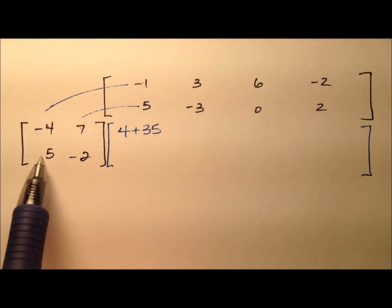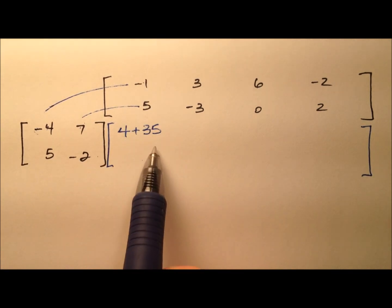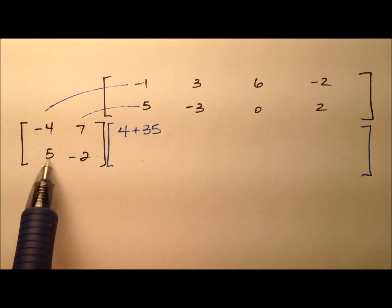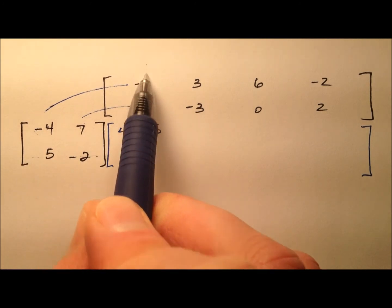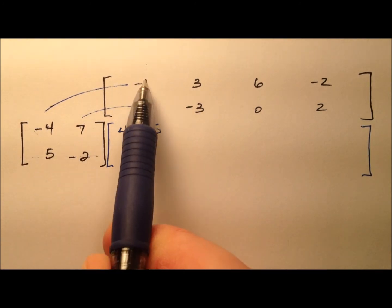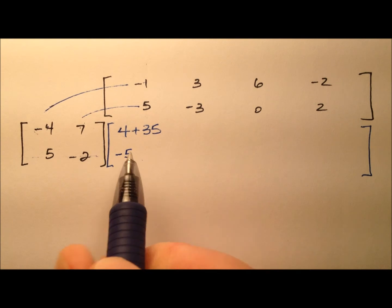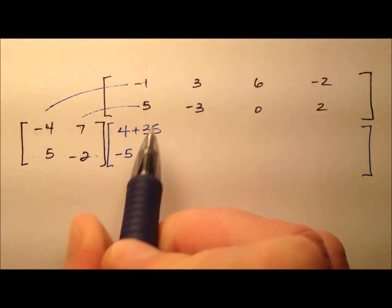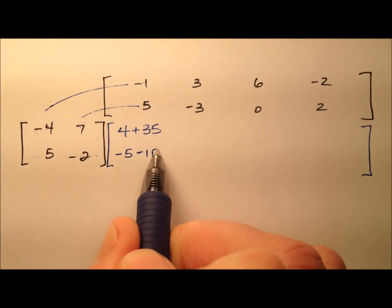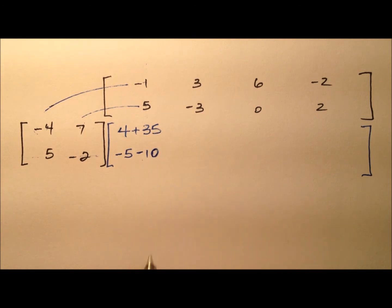So let's go ahead and move down to the second row and first column. So this entry will go here, and we'll be multiplying across the row and down the column. So 5 times negative 1 is negative 5, and negative 2 times 5 is negative 10, and we're just going to go ahead and add those two together.